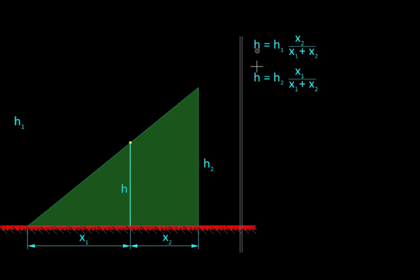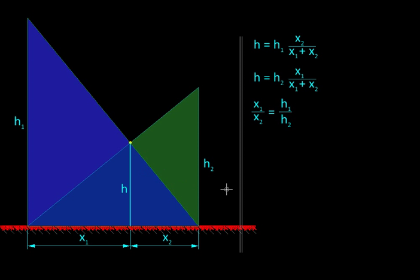Both the expressions are talking about h, so we can equate them and simplify. We will get x1 upon x2, the ratio of these two distances, is same as h1 upon h2, the ratio of the two heights. Hardly surprising—as this height increases, the distance x1 would increase and the point would be pushed towards right.